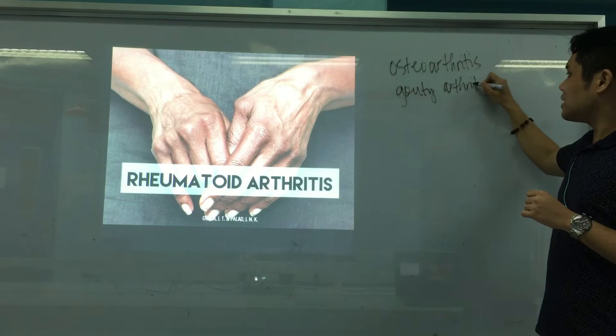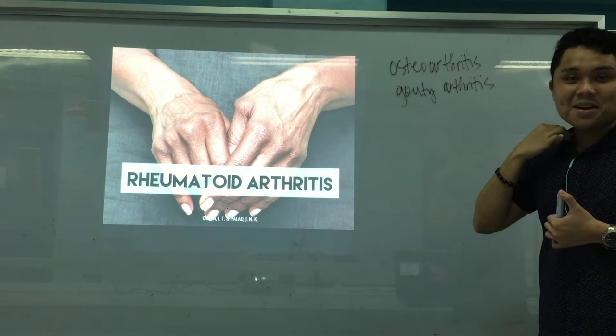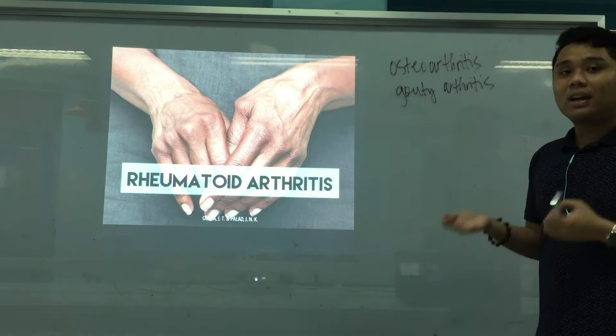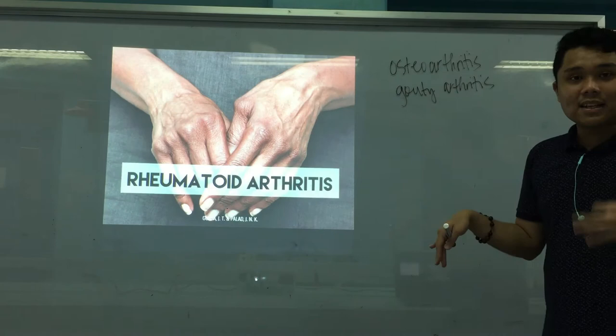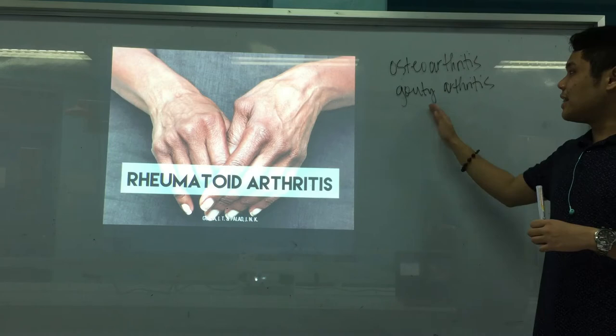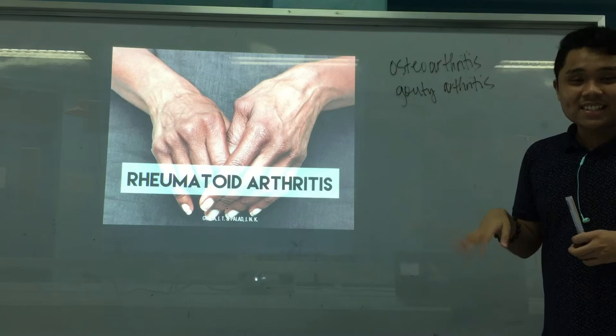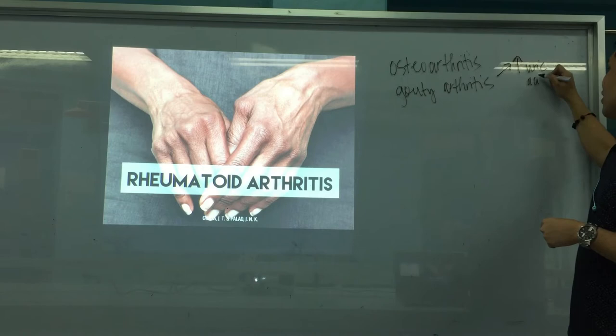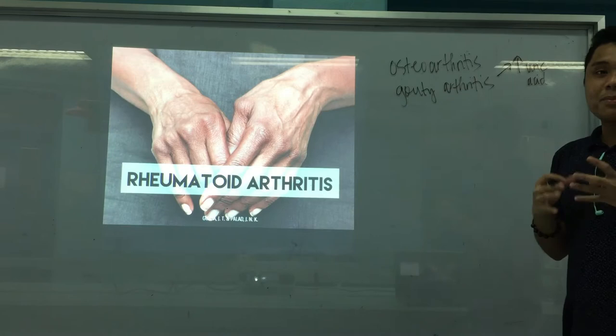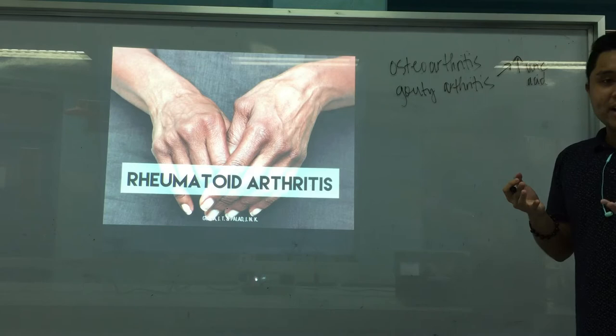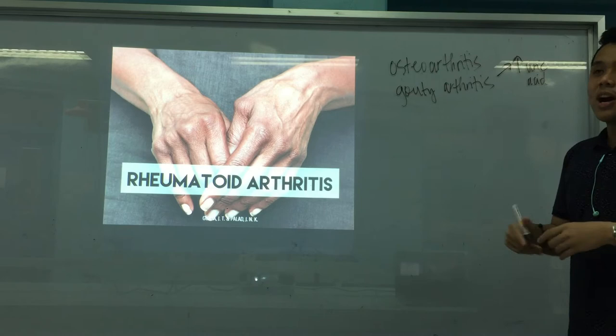The next one is gouty arthritis, or gout. This is arthritis brought about by the deposition of uric acid crystals on the different joints, especially in the fingers, toes, and the big toe. It's caused by increased uric acid. Too much uric acid will precipitate out of your bloodstream, become crystals, and these crystals will be deposited in your joints — making it very painful to move.